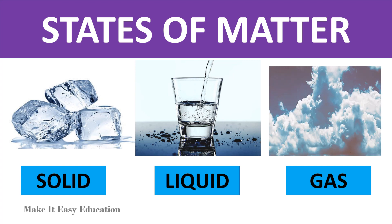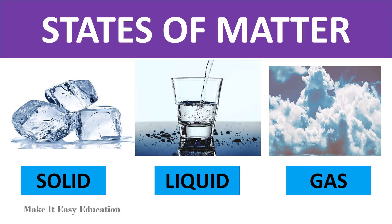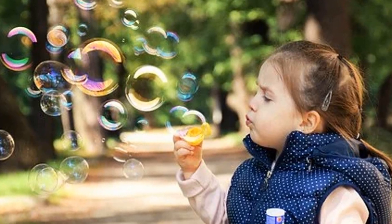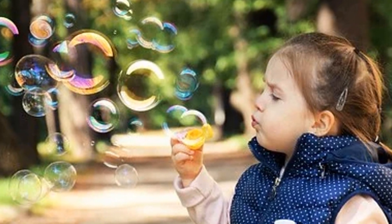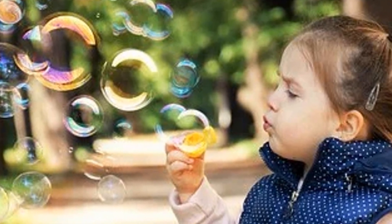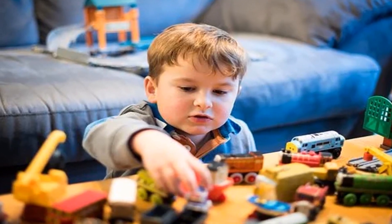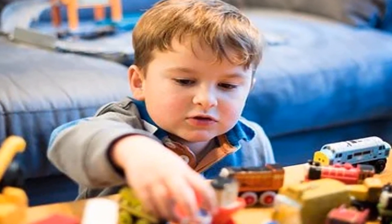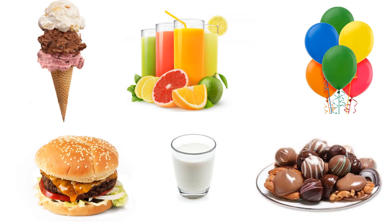States of matter. Matter is anything that takes up space and has mass. The boy and the objects around him are matter. Some examples of matter are ice cream, juice, balloons, burger, milk, chocolates, and many more.